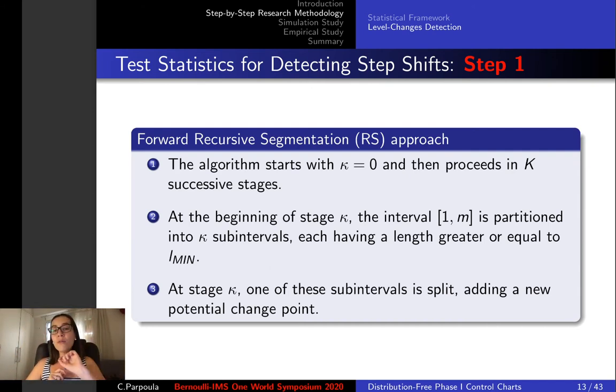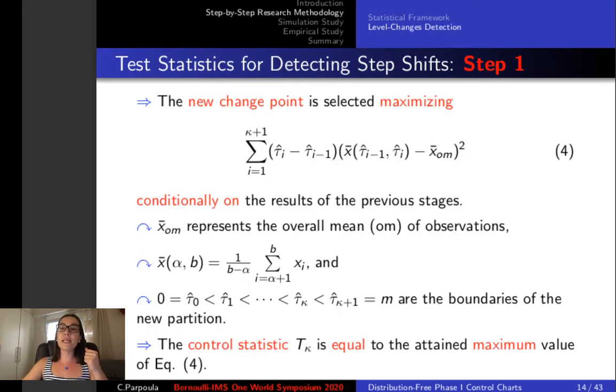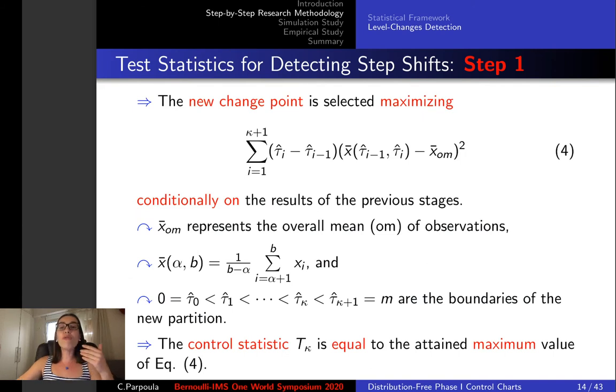Here l-min represents the minimum number of successive observations allowed between two change points. At stage kappa, one of these sub-intervals is split, adding a new potential change point, which is selected maximizing equation 4, conditionally on the results of the previous stages.